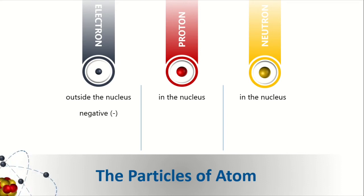The electron is negatively charged. The proton is positively charged. While the neutron is neutral.